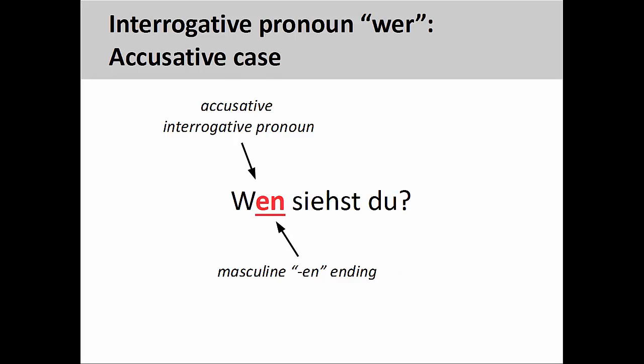In this slide, the masculine -en ending indicates that the interrogative pronoun is the direct object of the verb, and therefore in the accusative case. 'Wen siehst du?' meaning 'Whom do you see?'